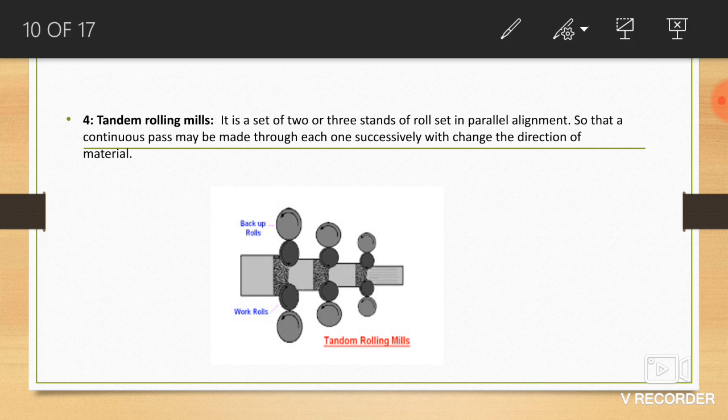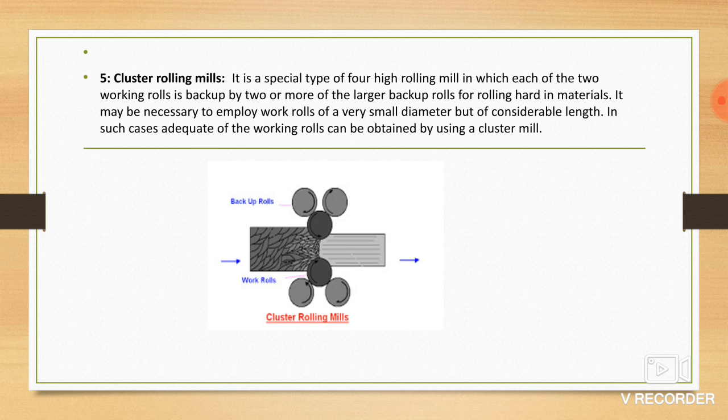Fifth, cluster rolling mill. It is a specific type of four high rolling mill in which each of the two working rolls is backed up by two or more large backup rolls for rolling hard materials. This is the diagram of cluster rolling mill.